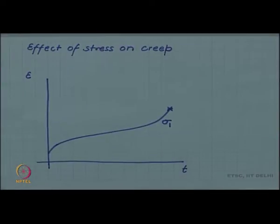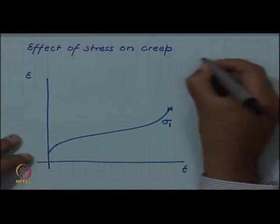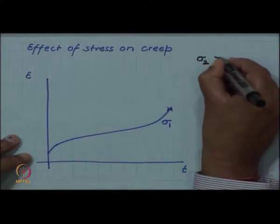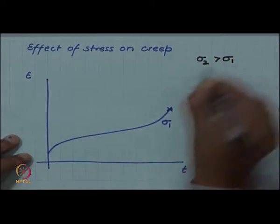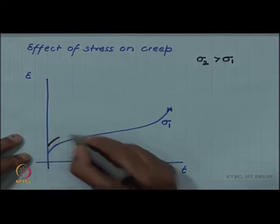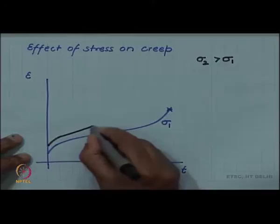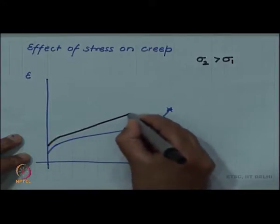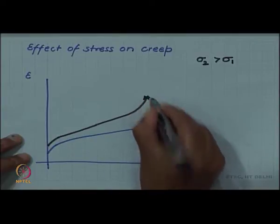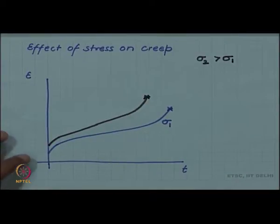If this test is done at a stress σ1 and if we now conduct a test at another stress σ2 greater than σ1, then the initial strain will be more. At the same time the steady state creep rate will be higher and finally, the creep life will be shorter.